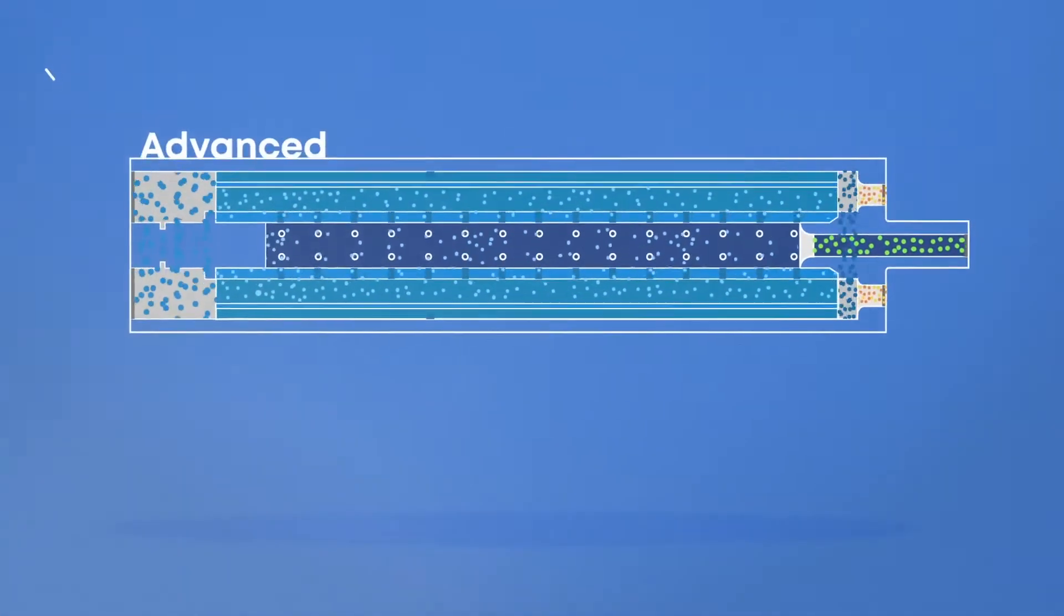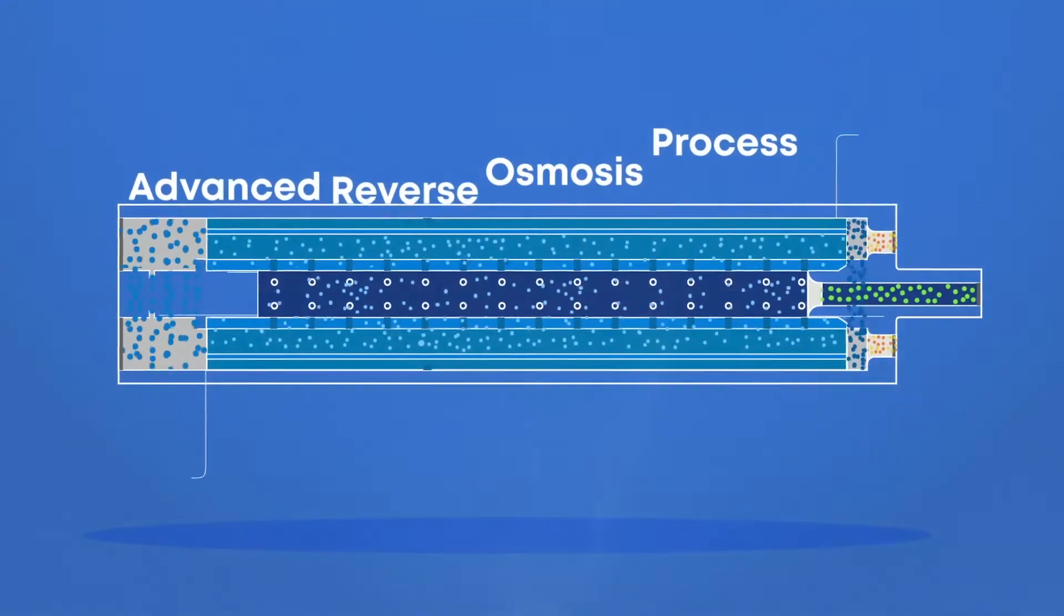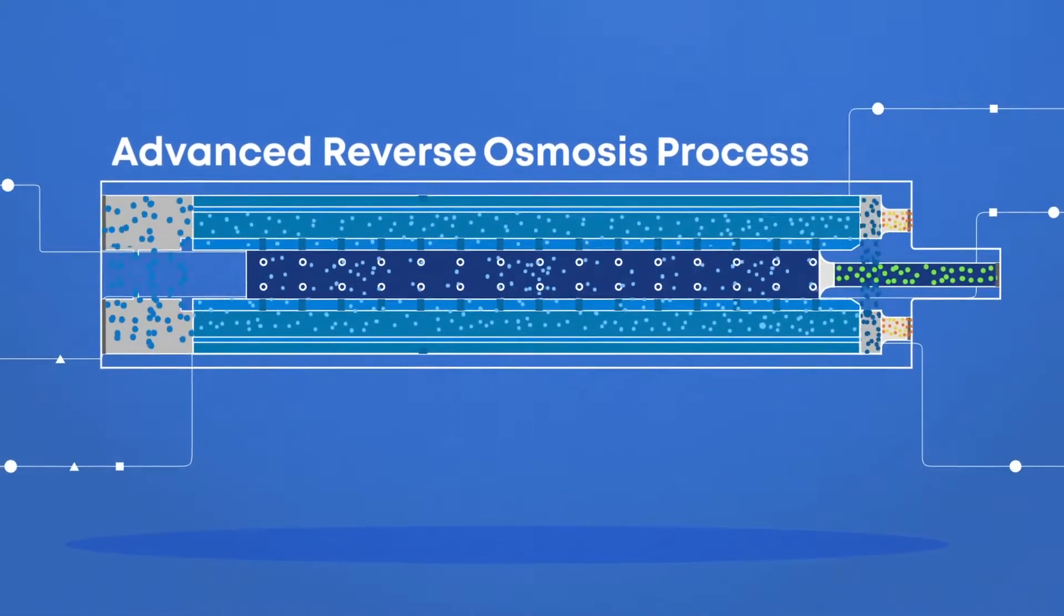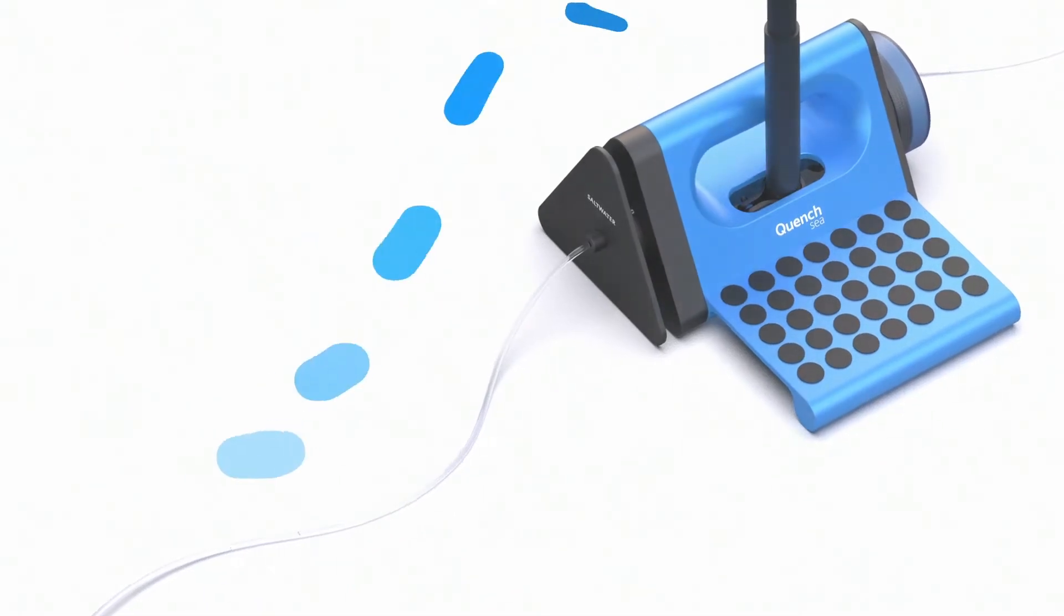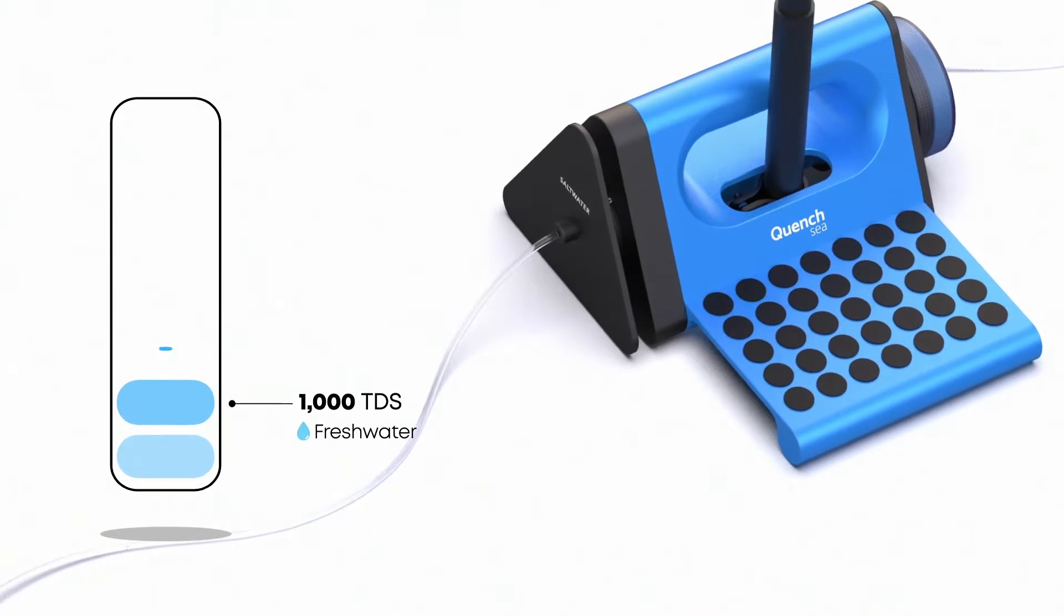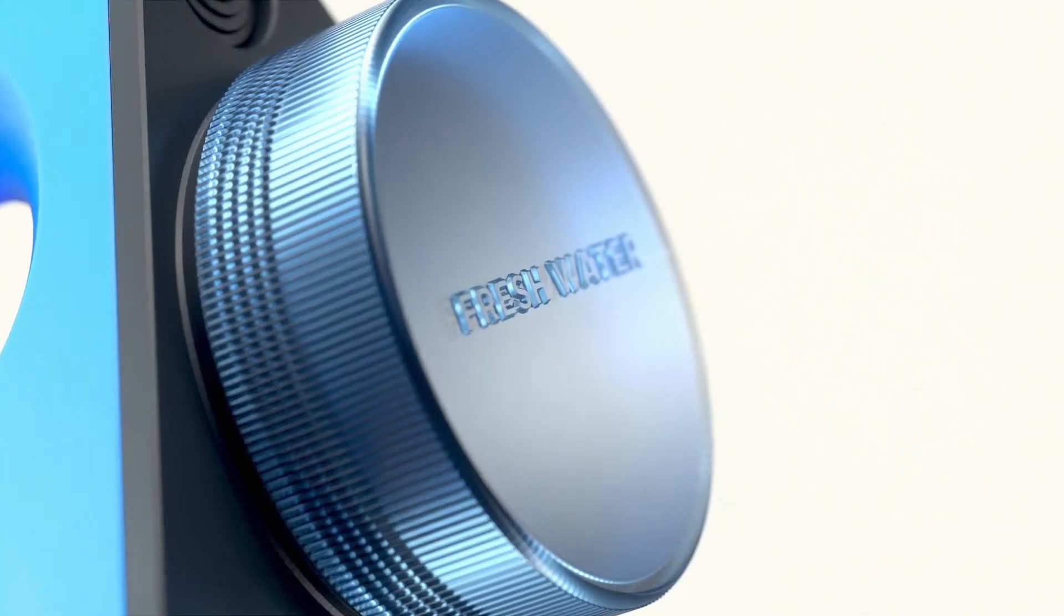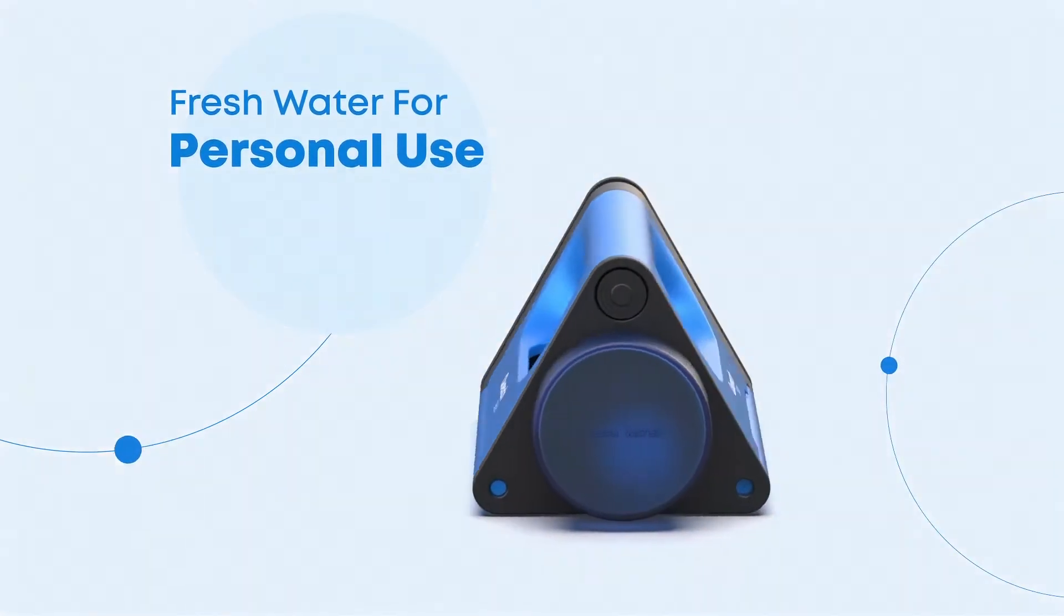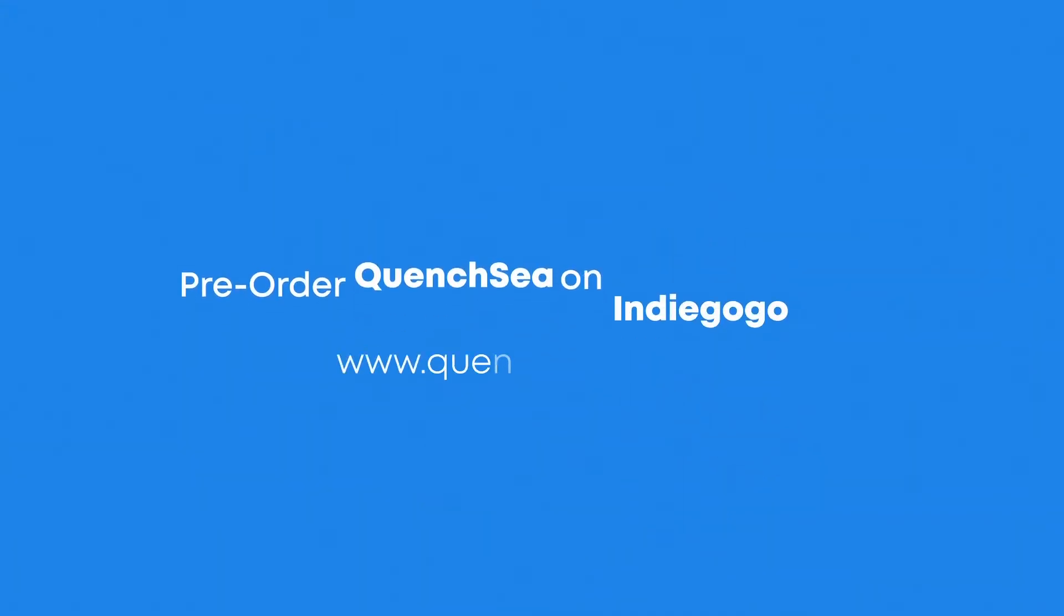Using an advanced reverse osmosis process, water molecules are forced through semi-permeable membranes to filter out impurities, salts, and all contaminants, leaving only pure safe drinking water that is guaranteed to be below 1000 TDS. QuenchSea is built to empower individuals to desalinate seawater into freshwater for personal use. Pre-order QuenchSea on Indiegogo now.